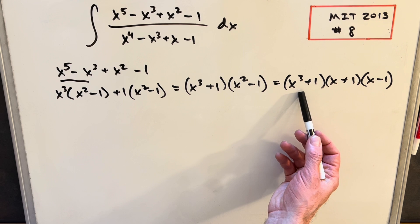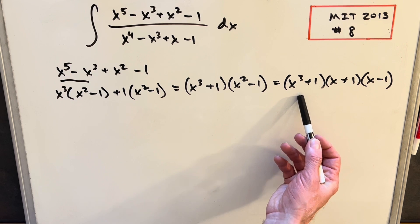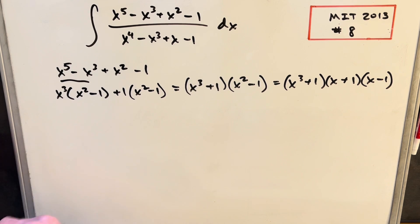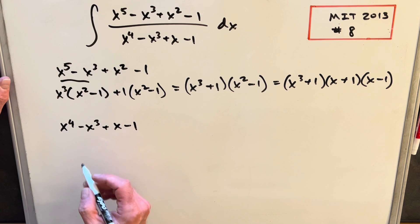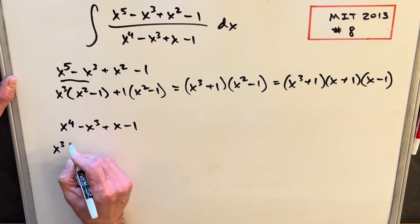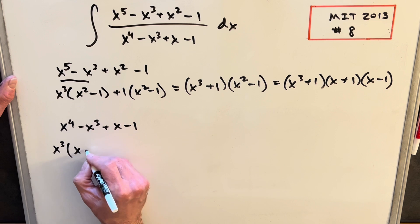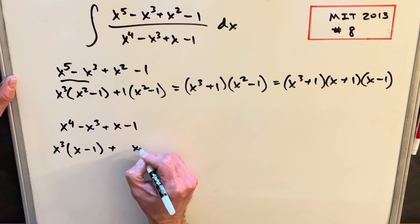We can factor this a little more as a sum of two cubes, but I'm going to skip that part and just go on to the denominator. Here we'll do something really similar. We'll factor out an x^3 again, and then that's in common here.